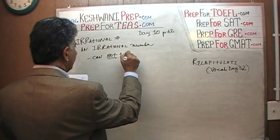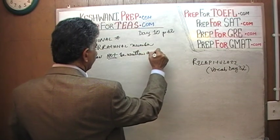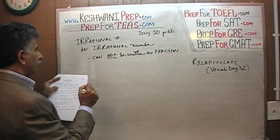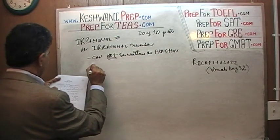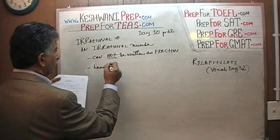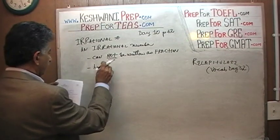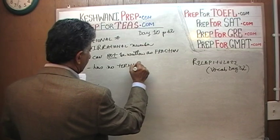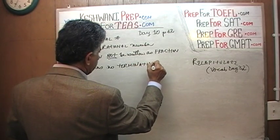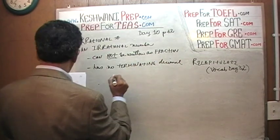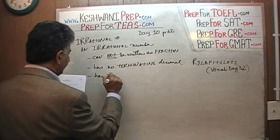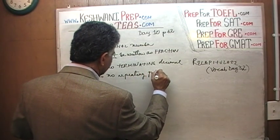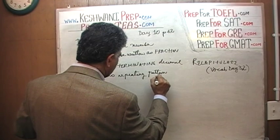An irrational number cannot be written as a fraction. It has no terminating decimal and it has no repeating pattern of decimals.